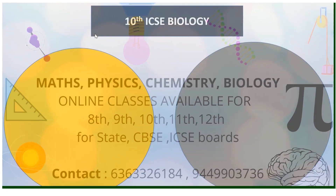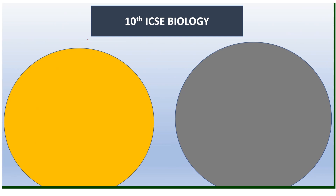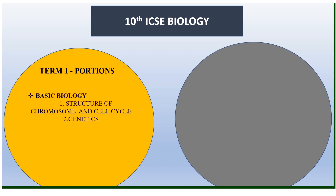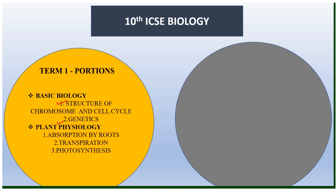Today we will be discussing about the 10th ICSE Biology portions. The 10th ICSE Biology portions have been bifurcated into two terms. In Term 1, you will have basic biology covering the structure of chromosomes and cell cycle, genetics, and plant physiology — which includes three chapters: absorption by roots, transpiration, and photosynthesis. These Term 1 portions will give you 40 MCQs.